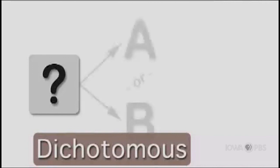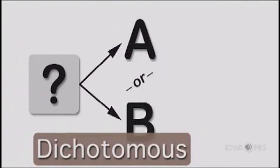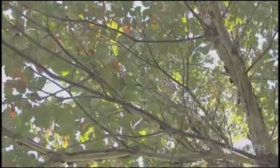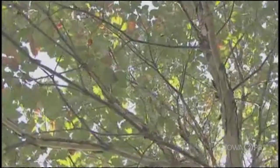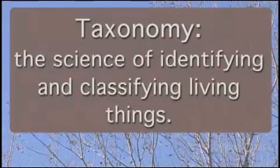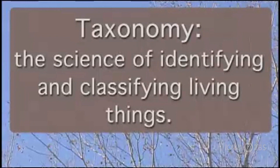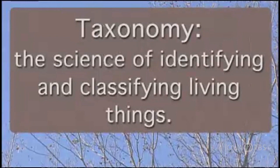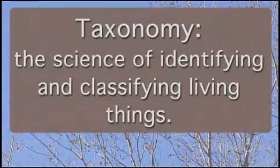By using a dichotomous key, you can identify different types of trees by looking at the leaves. The science of identifying and classifying living things is called taxonomy. Now that you can identify trees, walk around your neighborhood and see what kinds of trees are common to your area.